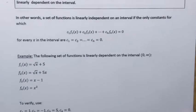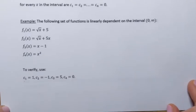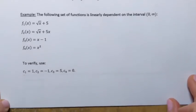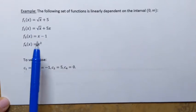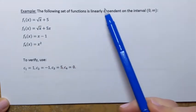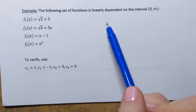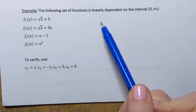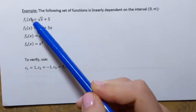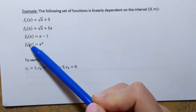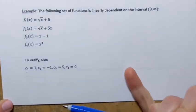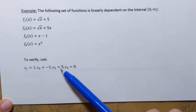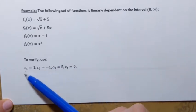Now to illustrate this, let's try an example. We have a set of four functions, and we want to show or verify that this set is linearly dependent. That means there are certain values of constants c1, c2, c3, and c4 such that when we multiply each function by the corresponding constant and add them all together, we obtain zero. The constants are given to us, so we're going to verify using the following constants.